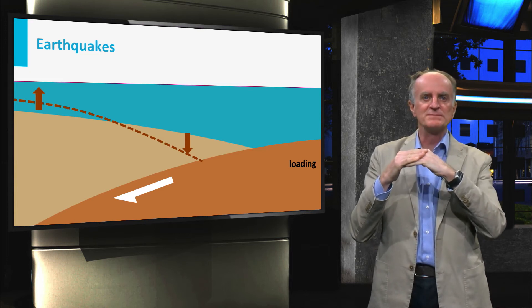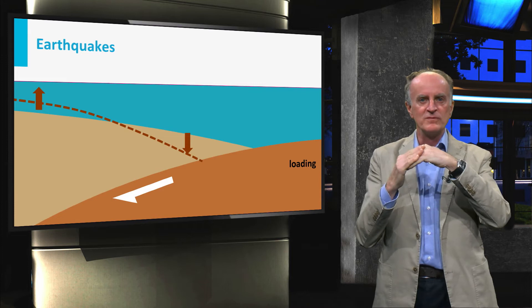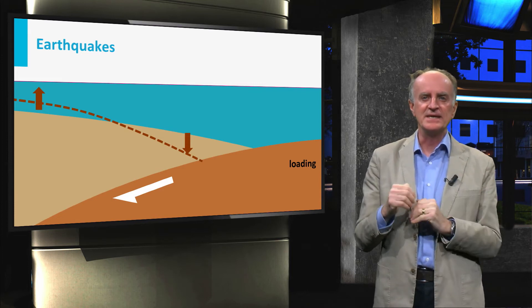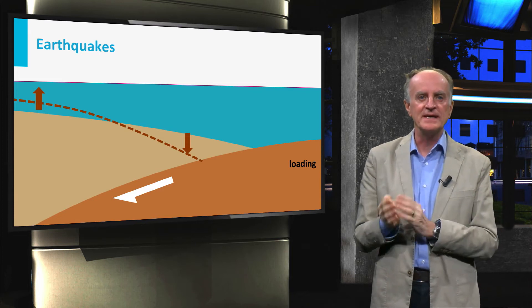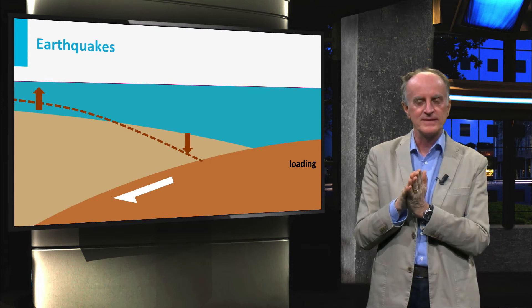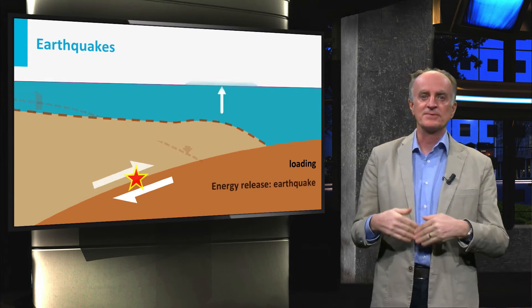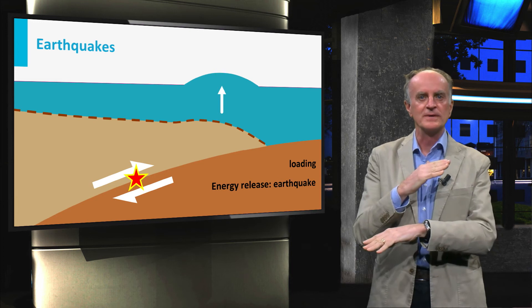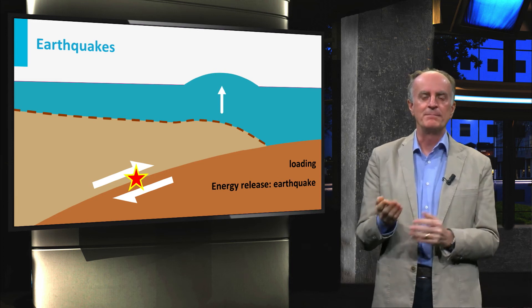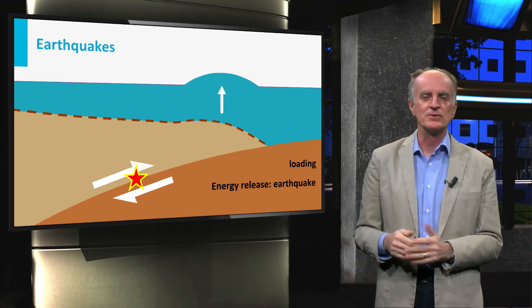The continuing convergence between the plates causes vertical movements in the upper plate and increased stress levels at the interface between the plates. Once the accumulated stresses overcome friction, slip will occur at the interface between the plates, generating large earthquakes.